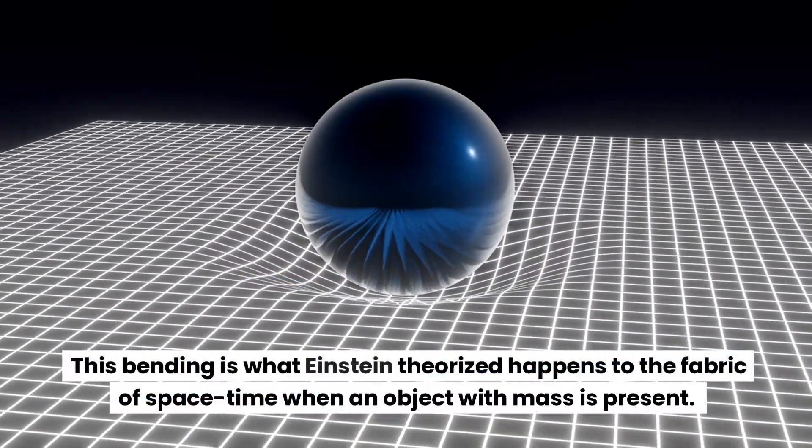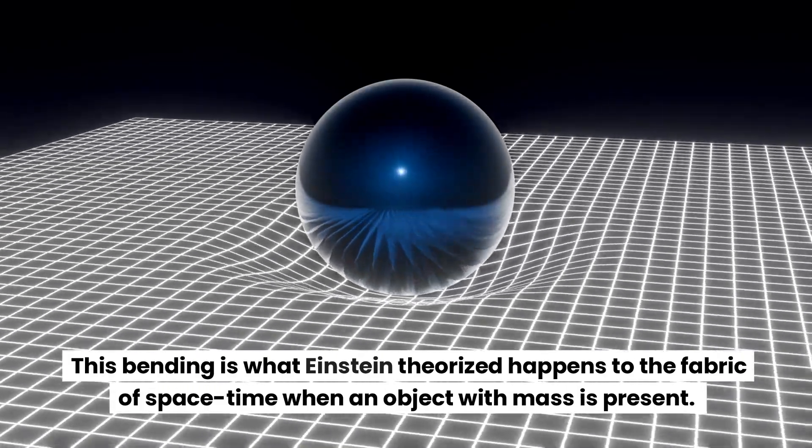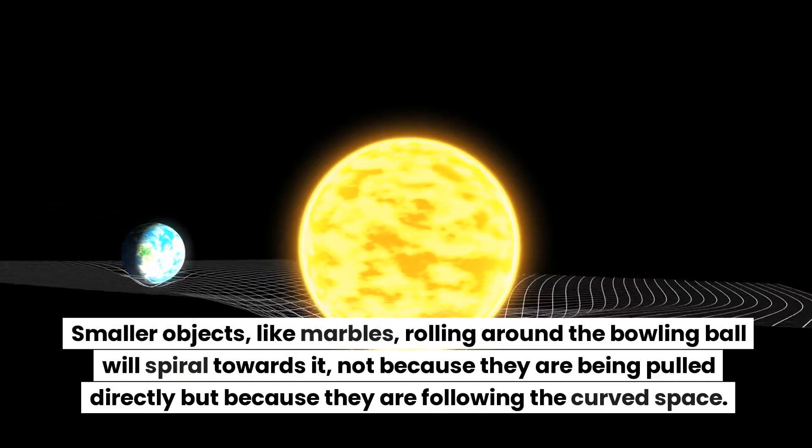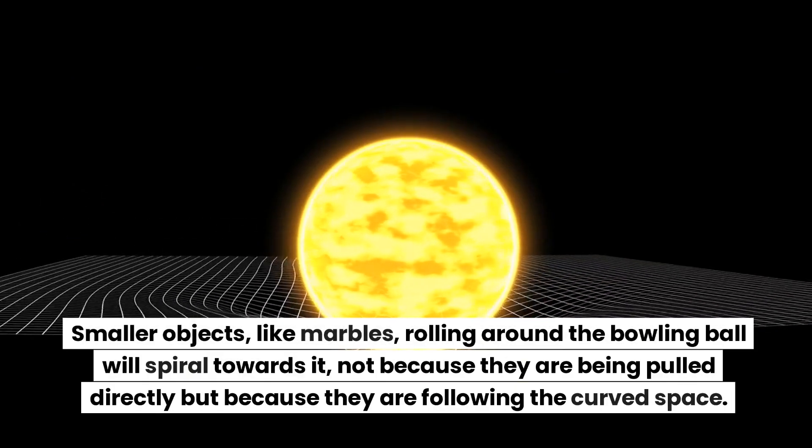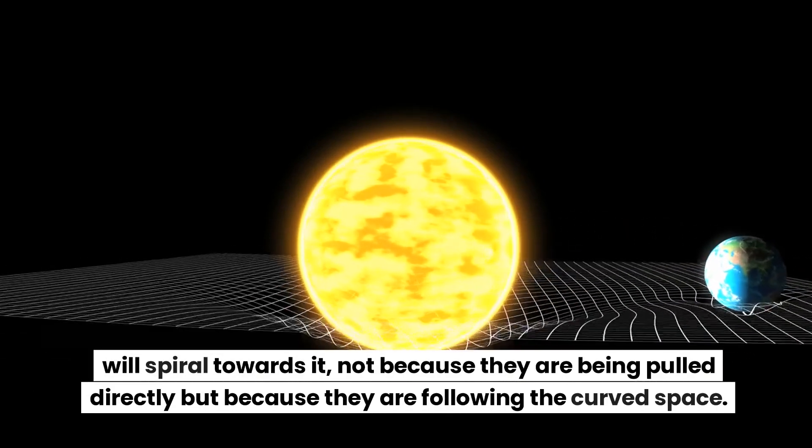This bending is what Einstein theorized happens to the fabric of space-time when an object with mass is present. Smaller objects, like marbles, rolling around the bowling ball will spiral towards it, not because they are being pulled directly, but because they are following the curved space.